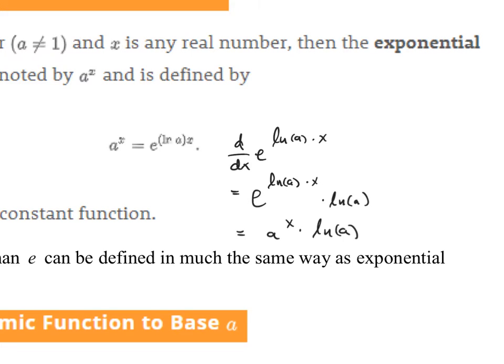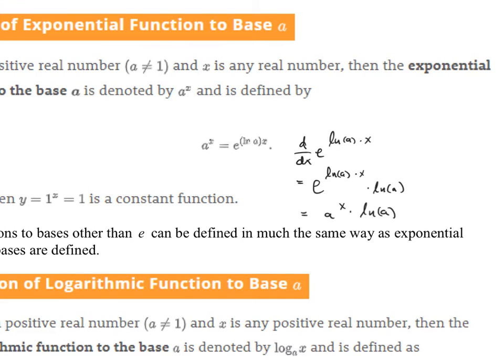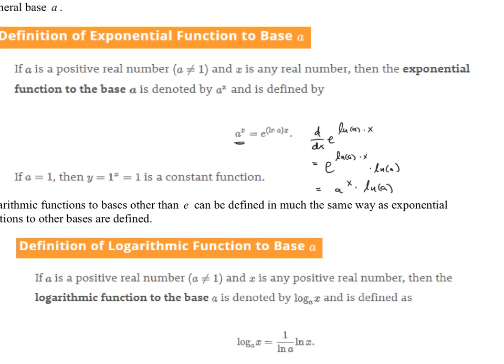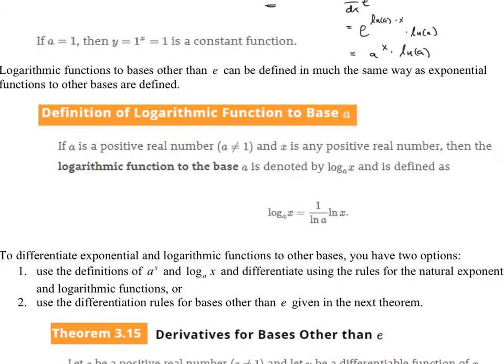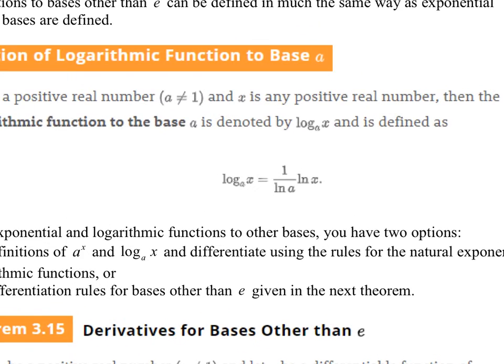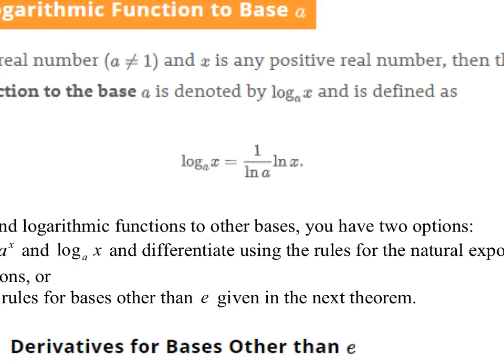So now that we have the chain rule, we're able to find the derivative of a to the x rather than just e to the x. So what is the derivative of a to the x? It's copy and paste, but then you need to multiply it times the natural log of the base, and that comes from using the change of base formula. They also did the change of base formula for the log base a of x. Well, the log base a of x is 1 over the natural log of a times the natural log of x.